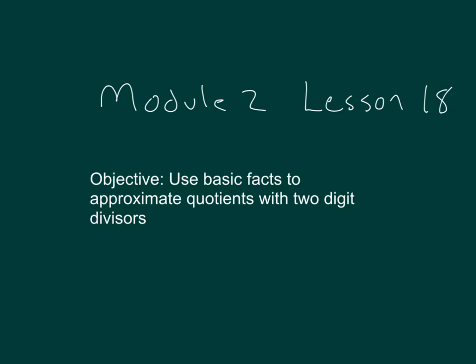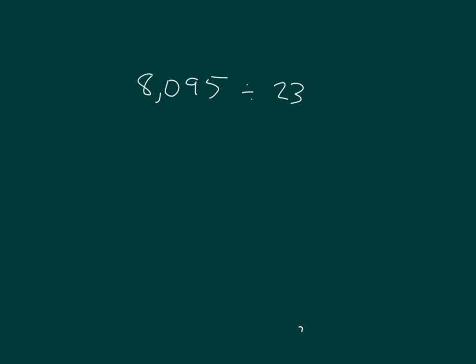Within this lesson, we'll use basic facts to approximate quotients with two-digit divisors. Here's our first problem. Which number should we round first? The whole or divisor?